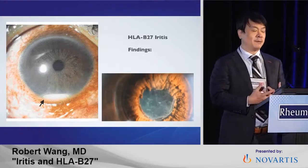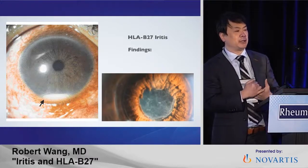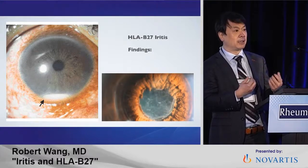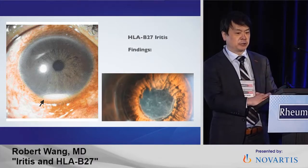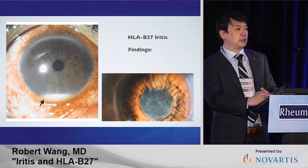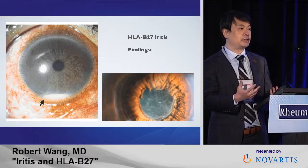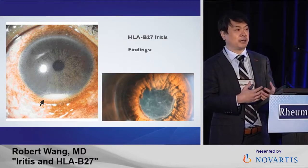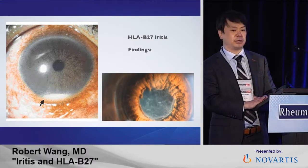What about anterior uveitis and HLA-B27? HLA-B27, when we see it, actually has a very classic appearance that you don't see anywhere else. What these two pictures depict is what we call a hypopion and a fibrinoid reaction. When I look in the eye, I already know that they're HLA-B27 positive — it's not even that I'm guessing on the blood test. This is just such a remarkable finding that it makes it super easy to diagnose.